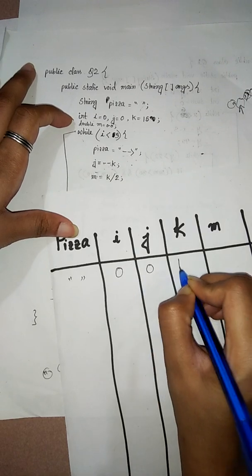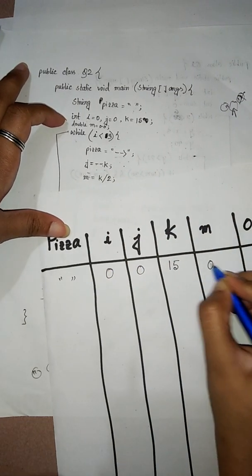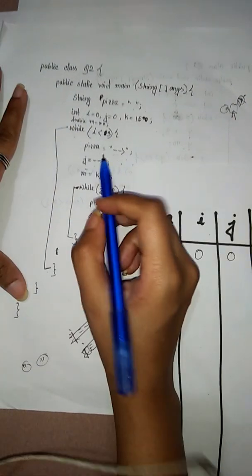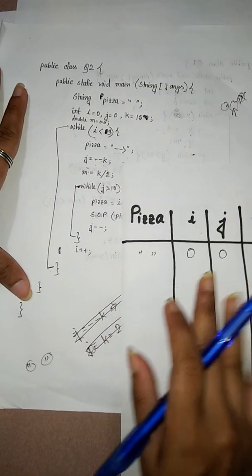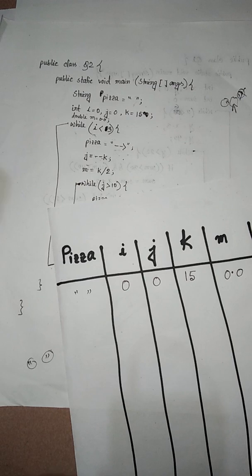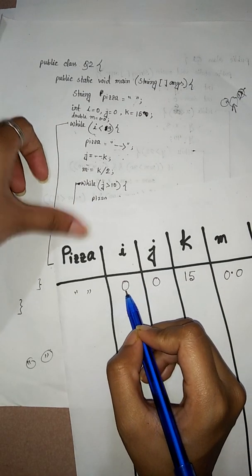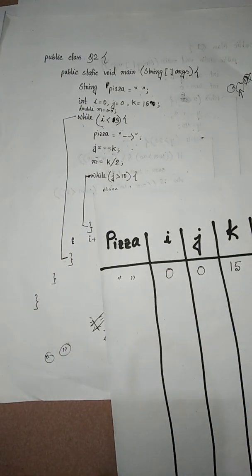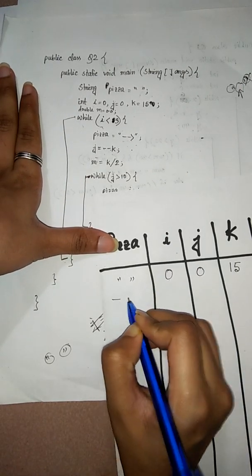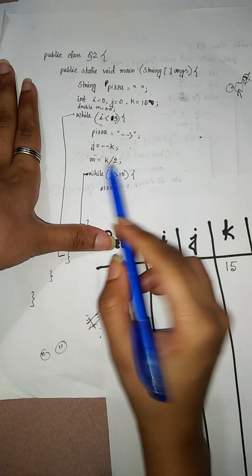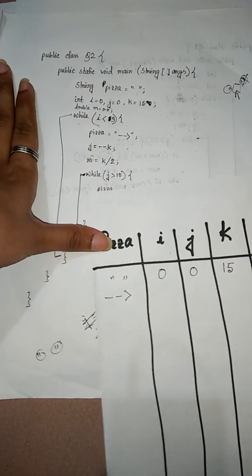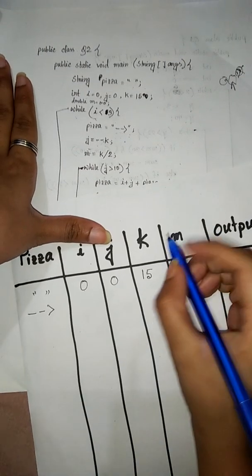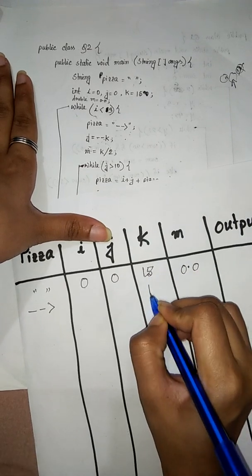i equals to 0, j equals to 0, k equals to 15, and m is a double so 0.0. Then a condition to fulfill — a loop condition. I less than 3. i equals to 0 which is less than 3, so we enter the loop. We can remember the first pizza value change. Then j equals to minus minus k, that means k value gets decremented. Then we assign the value to j.